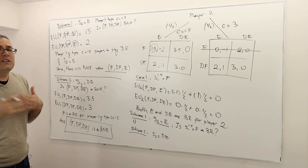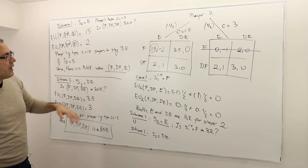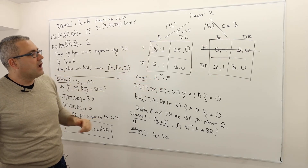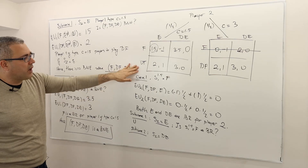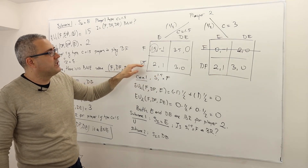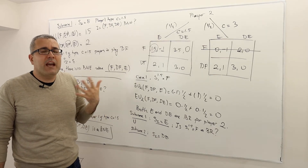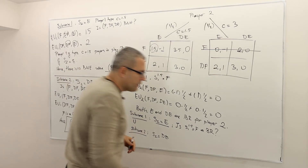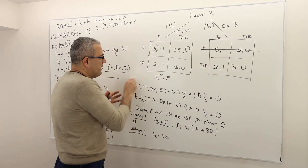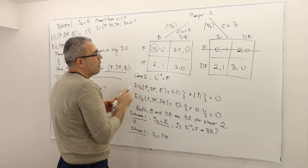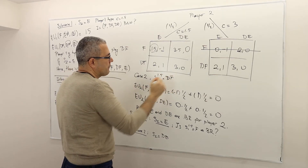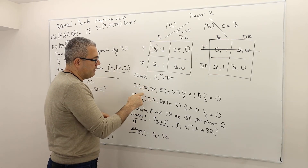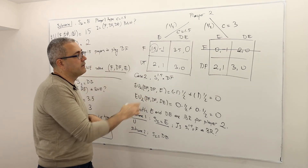Is that it? Can I say this is the only Bayesian-Nash equilibrium? Well, remember I had case 1 where player 1 of type 1.5 plays F, but there's also case 2, where player 1 of this type is playing DF — don't fight. Can we find a Bayesian-Nash equilibrium in this case? So case 2: S1(1.5) is don't fight. Once again, I'm going to calculate expected payoff of player 2, assuming player 1 is playing don't fight in both games.